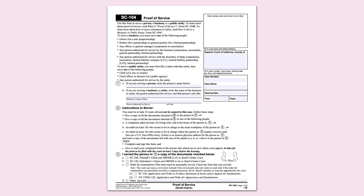If you ask a friend or relative to serve court papers on the defendant, make sure they complete SC-104, the form for proof of service, and submit it to the court at least five days before the hearing date. If you request that the sheriff serve the court papers, you must provide two court-stamped copies of form SC-100 for each defendant, along with the signed sheriff's service instructions. The sheriff charges a service fee of $40 per defendant unless a fee waiver has been approved. Process servers do not accept fee waivers and their fees vary. Both the sheriff and a registered process server use their own proof-of-service forms.